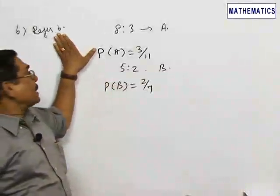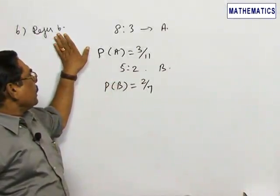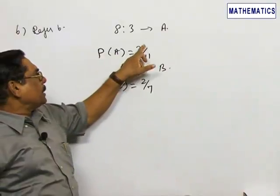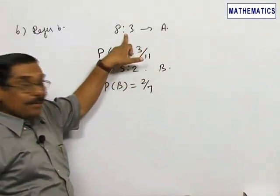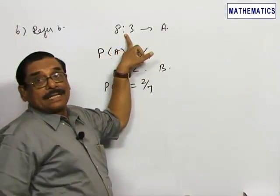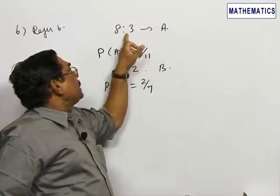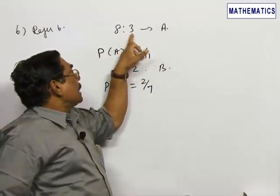Now you refer problem number 6. Given the probability of A equal to 3 by 11, I derive from this data that the odds against A is 8 is to 3. Since it is against, I take the second one 3 by the total is 11.